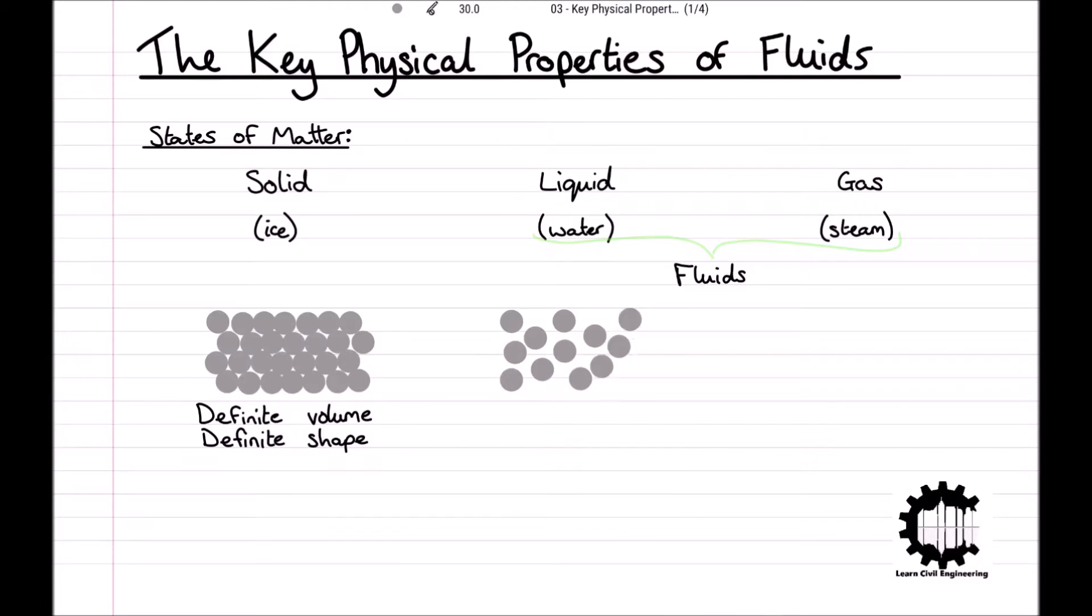Molecules of a substance in a liquid state are also closely packed, however the molecules are in continual relative motion to each other so the arrangement of the molecules is constantly changing. Intermolecular cohesion means that a liquid has a definite volume but it has no definite shape.